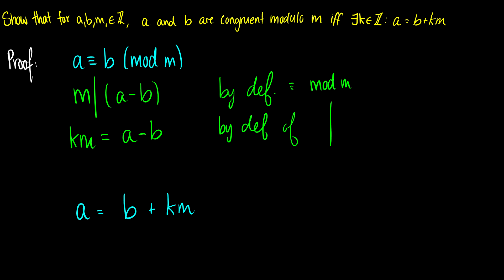And the first one is by definition of the equals mod m operator. So at this point, we can just rearrange terms. So we can move the b over to the left side. So we're going to get b plus km is equal to a.